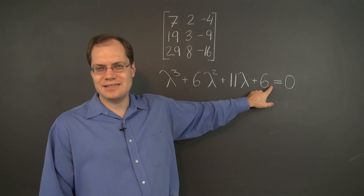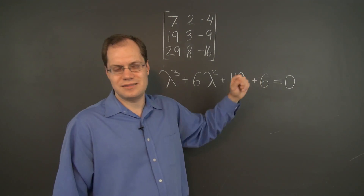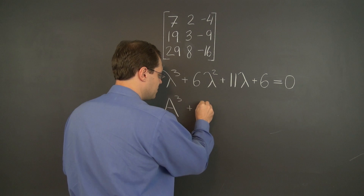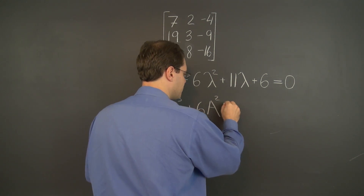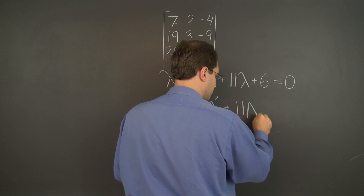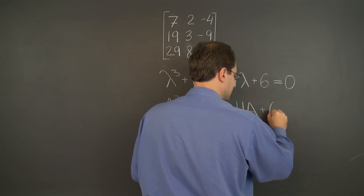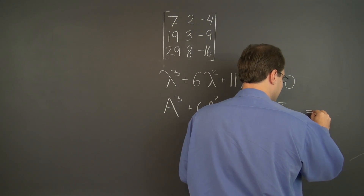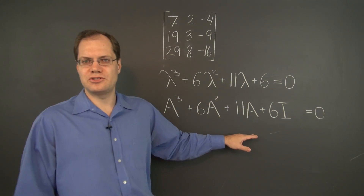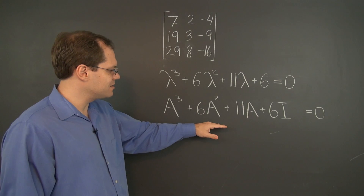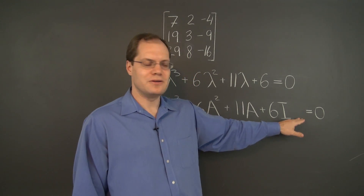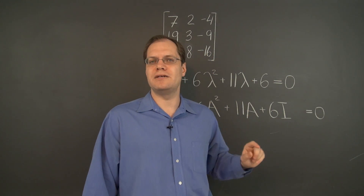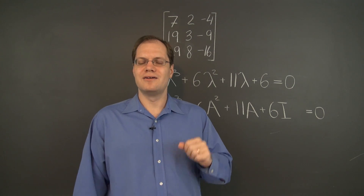So we'll be evaluating A cubed plus 6A squared plus 11A to the 1st power plus 6A to the 0th power, which is the identity. And this will equal 0. The statement is that this matrix polynomial — this matrix plus this matrix plus this matrix plus this matrix — equals the 0 matrix, a 3 by 3 grid of all zeros.